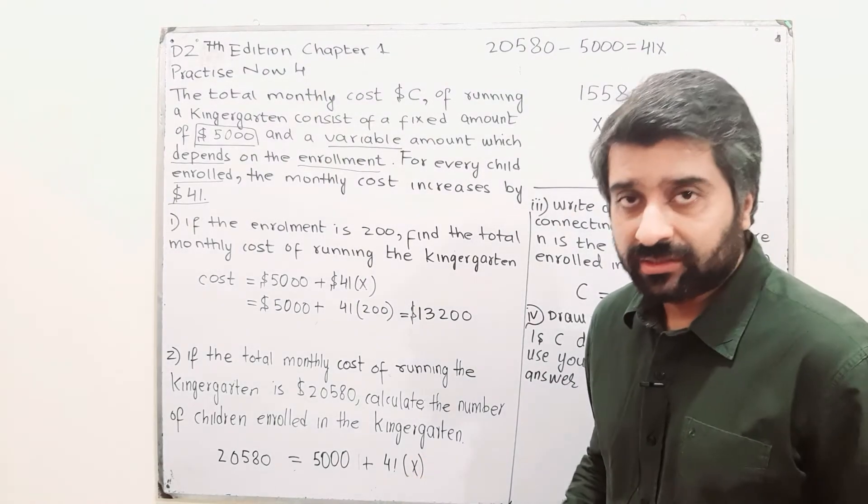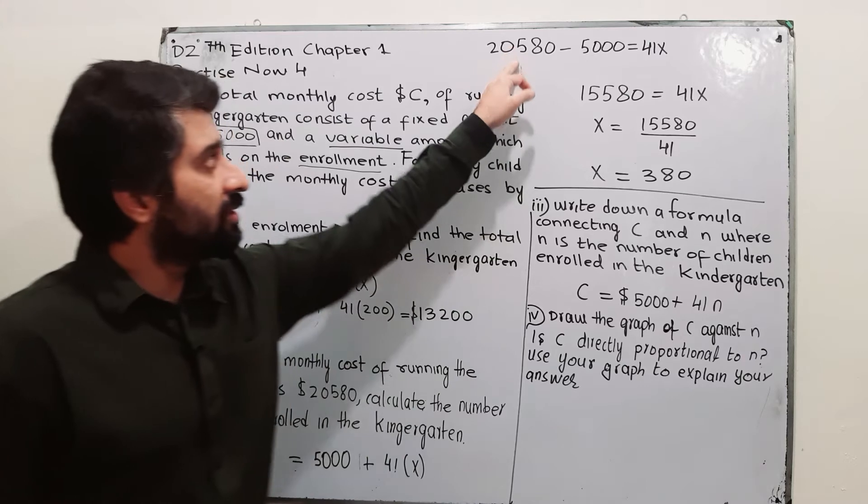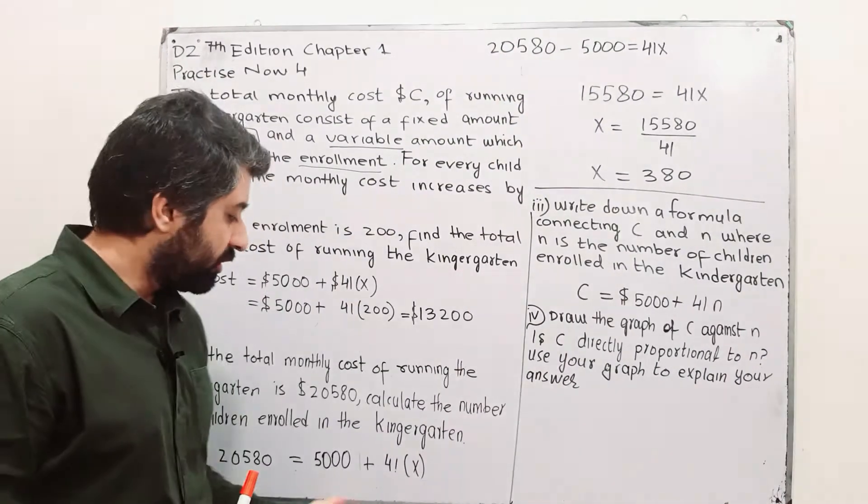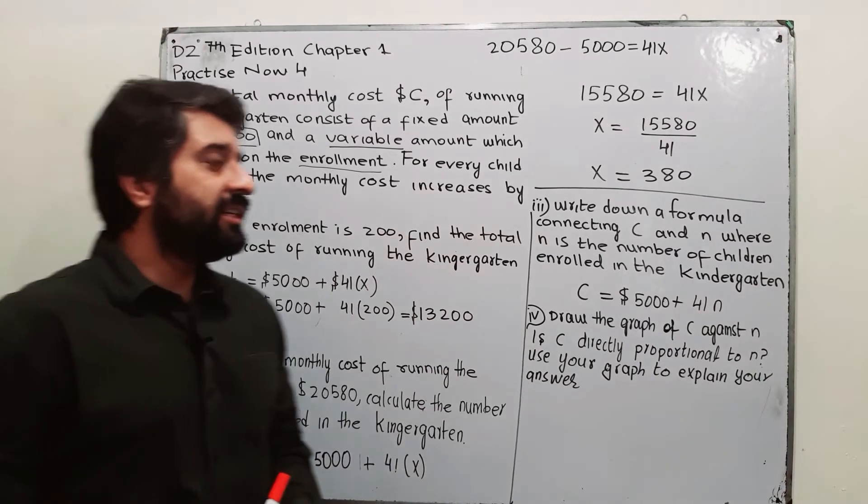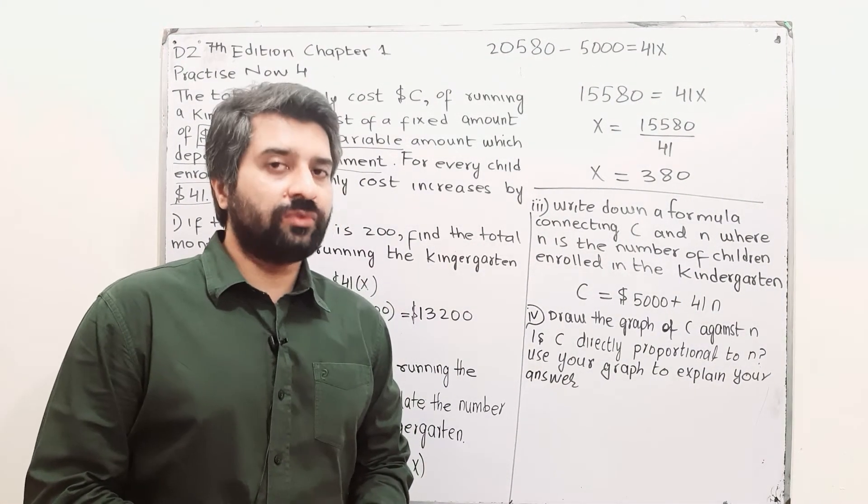Now, x is the number of students enrolled. So, what you can do over here, this will be 20,580 minus 5,000 is equal to 41x from this equation and x will be 380. So, 380 students will be enrolled for this case.